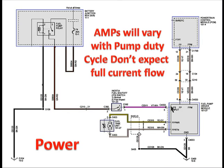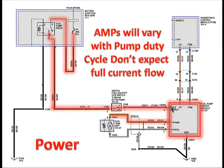In this system we're going to supply power to a fuel pump driver module. The amps will vary with pump duty cycle, so don't expect full current flow. I was recently working on a Crown Victoria — we had 50% duty cycle and we had 3 amps at the pump. We expected the pump to have 6 amps, but at 50% duty cycle we expect that 6 amps to be cut in half. So for that vehicle, 3 amps were normal.